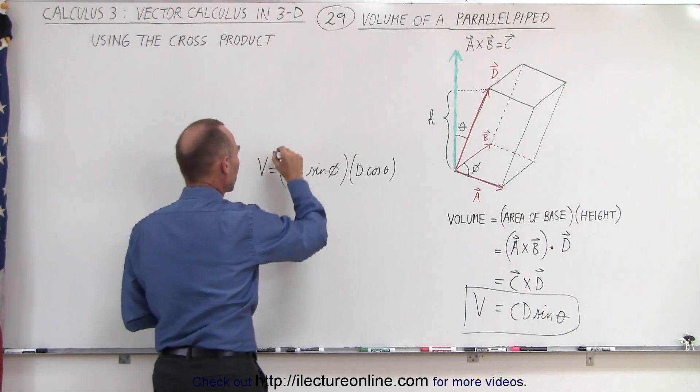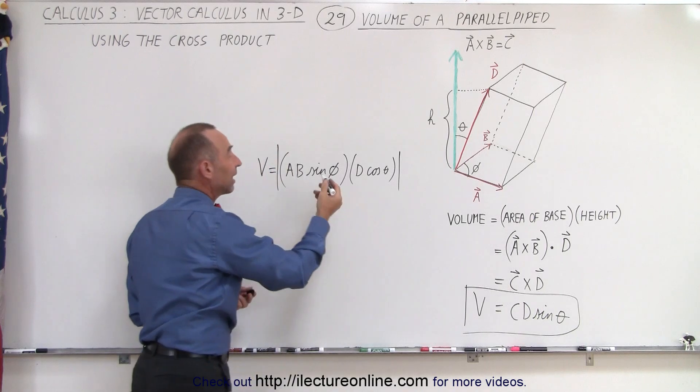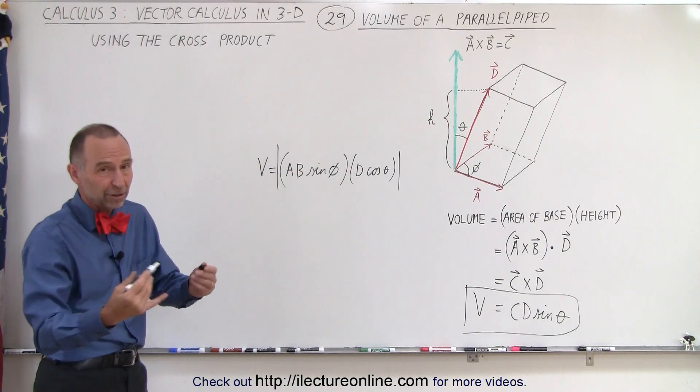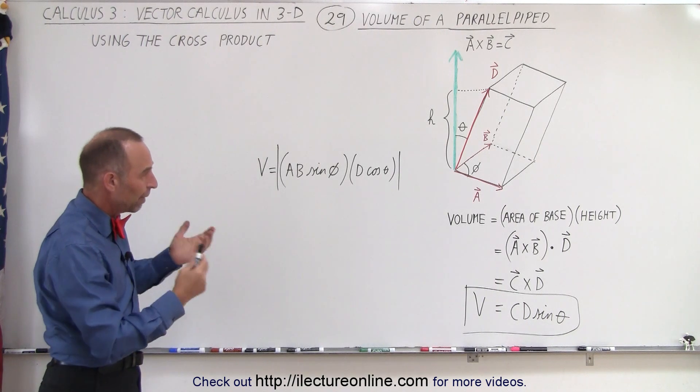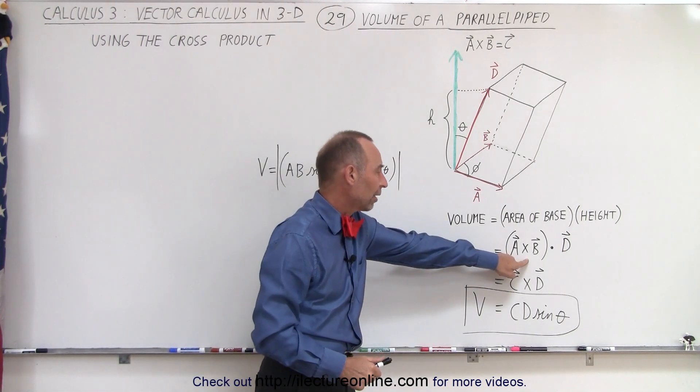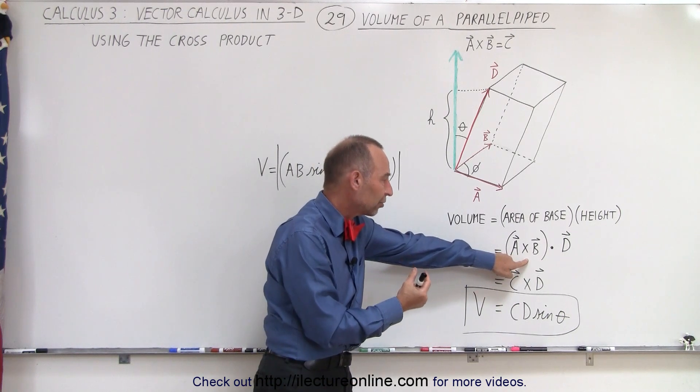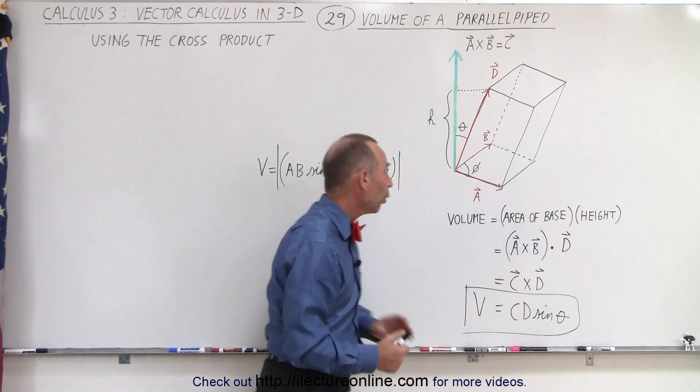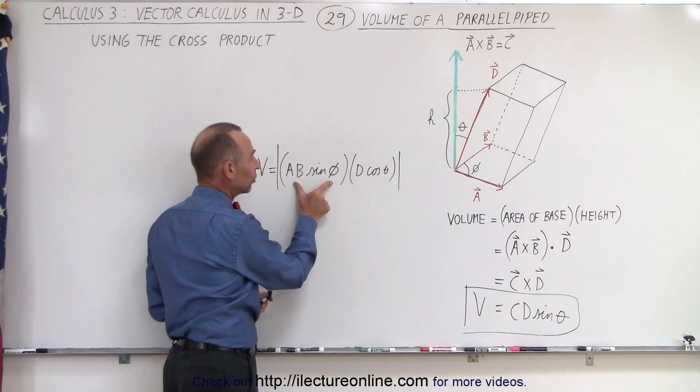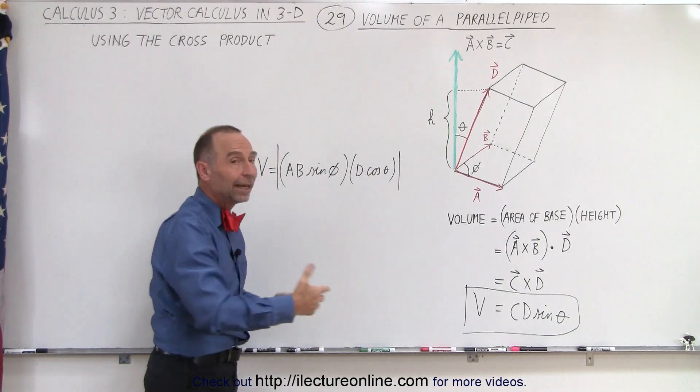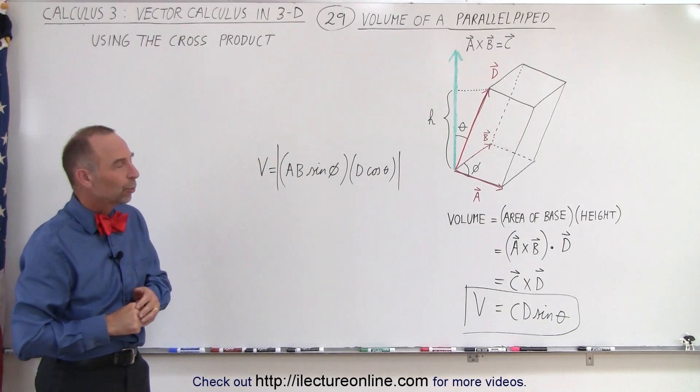Of course, we probably want to put absolute value signs around it in case that's a negative quantity. If it's a negative quantity, of course, you don't want the negative volume, it doesn't exist, you want to make it into a positive quantity. You can either do it by first taking the cross product, keeping it as a vector, the vector C, and then dotting it with the vector D, or you can take the magnitude of the cross product and then multiply it times D times the cosine of theta, if the angles are known, and then you can find the volume that way as well.